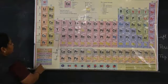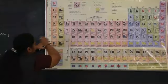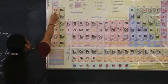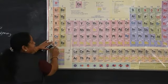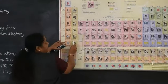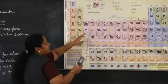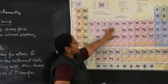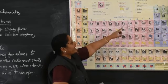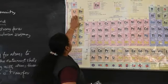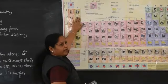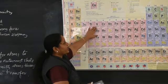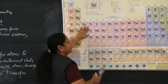Group 1 elements are called alkali metals, and group 2 elements are called alkaline earth metals. Groups 3 to 12 are called D block elements, otherwise known as transition elements. Why are these called S block, D block, or P block? It depends on which orbital the last electron enters when you write the electronic configuration.